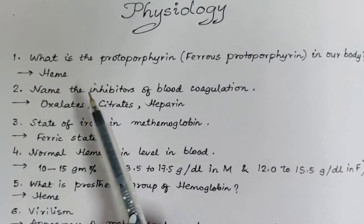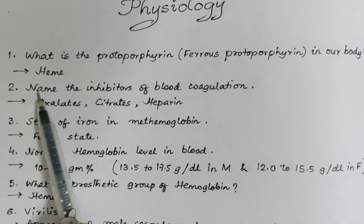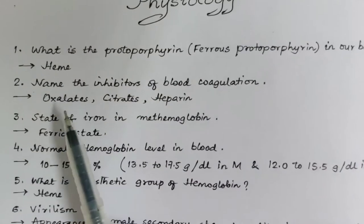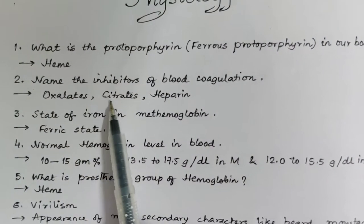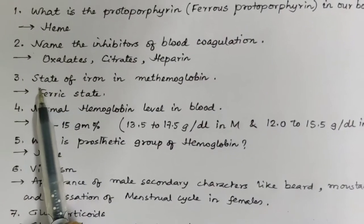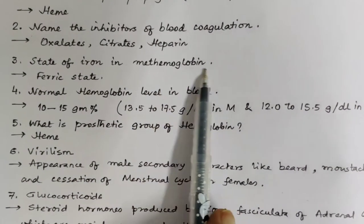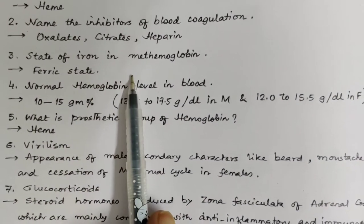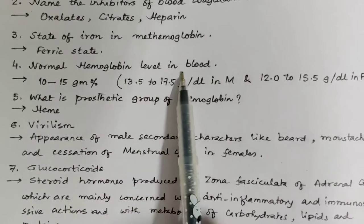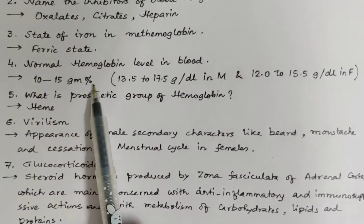Name the inhibitors of blood coagulation. The answer is oxalates, citrates, and heparin. Next: what is the state of iron in methemoglobin? It is in the ferric state. Normal hemoglobin level in blood: it is 10 to 15 gram percentage — 13.5 to 17.5 g/dL in males and 12 to 15.5 g/dL in females.